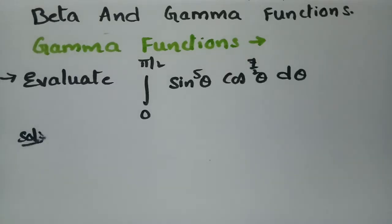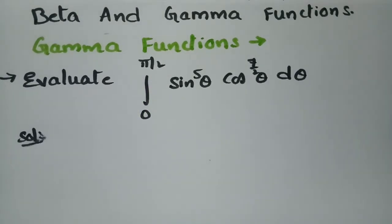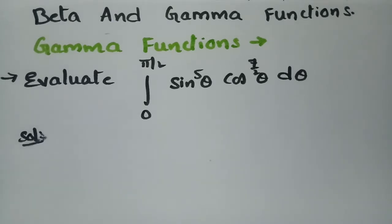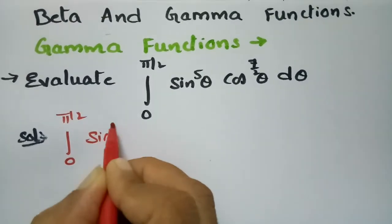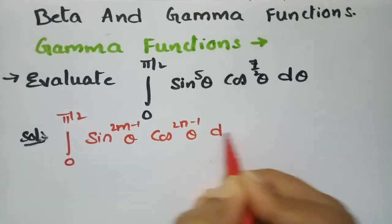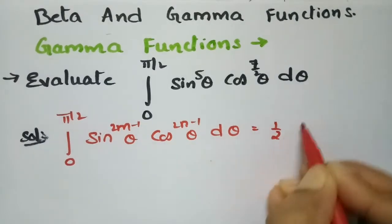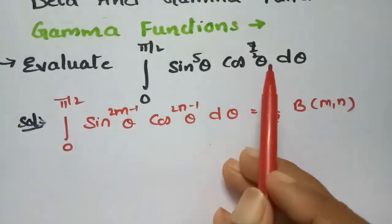Today's topic is beta and gamma functions. Using the gamma function, we have to evaluate the integral from 0 to pi/2 of sine power 5 theta times cosine power 7/2 theta d-theta. For that, we use the formula: the integral from 0 to pi/2 of sine^(2m-1) theta times cos^(2n-1) theta d-theta equals one-half times beta(m, n).